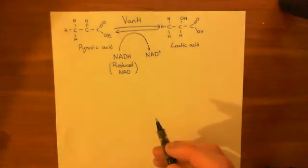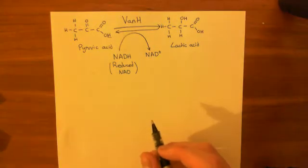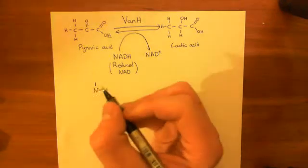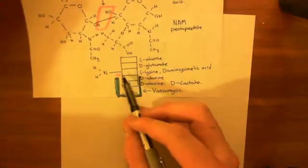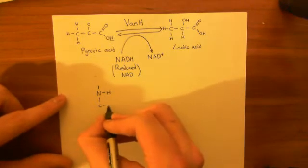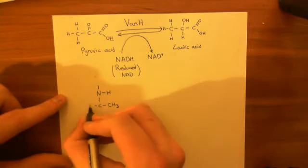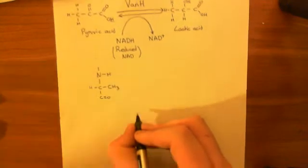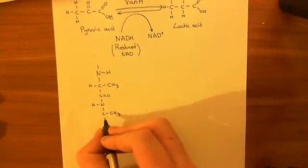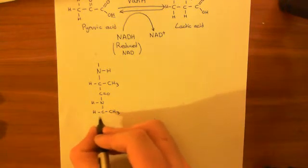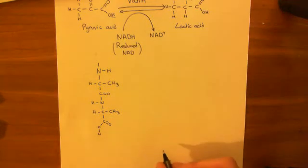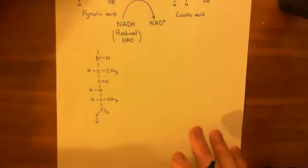Let me show you the structure of the D-alanine–D-alanine dipeptide. The first alanine is bonded to the third amino acid above by its amino terminus. Here's the alpha carbon, and the R group in alanine is a methyl group. Then you have the carboxyl group, which is linked by an amide bond to the next alanine molecule — with its alpha carbon, R group, hydrogen, and terminal carboxyl group. This final carboxyl group binds with the L-lysine or diaminopimelic acid amino group to form those crosslinks.